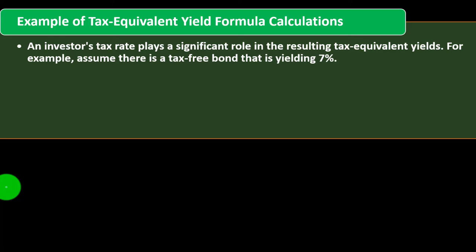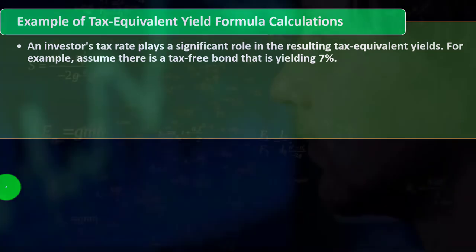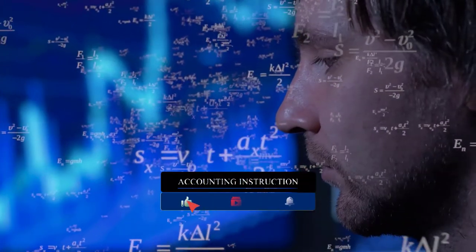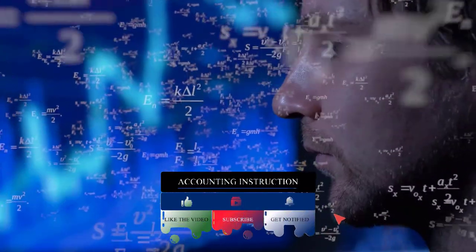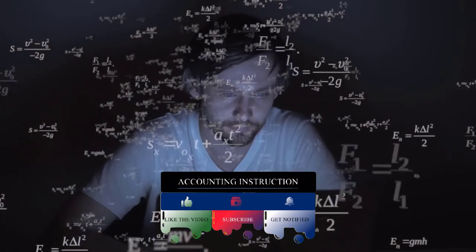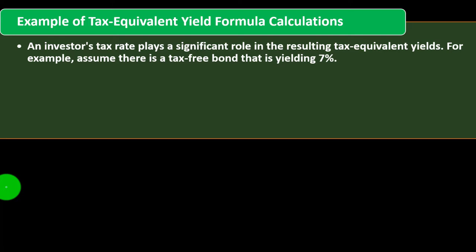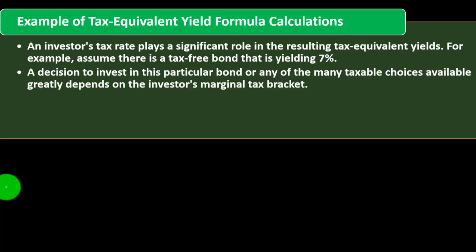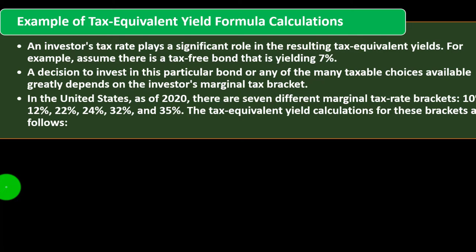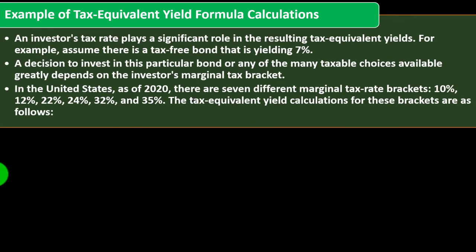An investor's tax rate plays a significant role in the resulting tax-equivalent yields. If you're at a higher marginal tax bracket — meaning you're a higher income earner — this tax incentive will be more beneficial to you. Wealthier individuals would likely influence the market in that case, and your income level may significantly impact how much you'd want to invest in bonds with that tax benefit. As an example, assume there is a tax-free bond yielding 7%. The decision to invest in it greatly depends on the investor's marginal tax bracket, which is dependent in part on their income level.